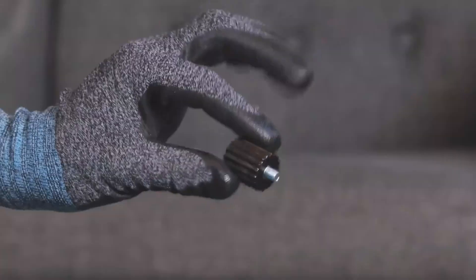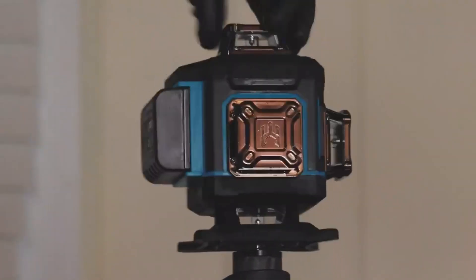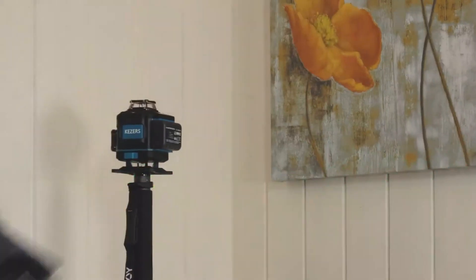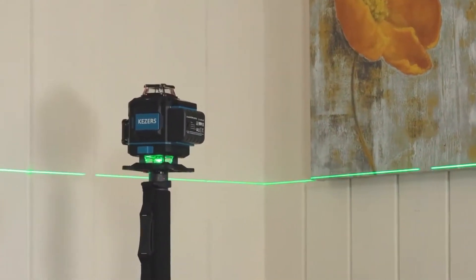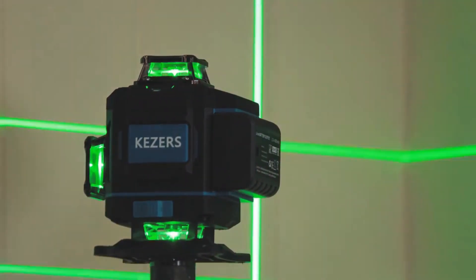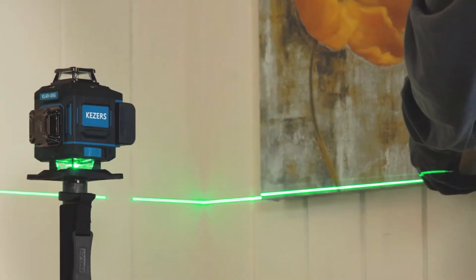It is user-friendly, offering multiple modes like self-leveling, manual mode, and pulse mode, allowing for easy work on uneven surfaces. The laser level has a rechargeable 4000 mAh lithium battery, allowing it to operate for 5-7 hours, with all laser lines turned on.